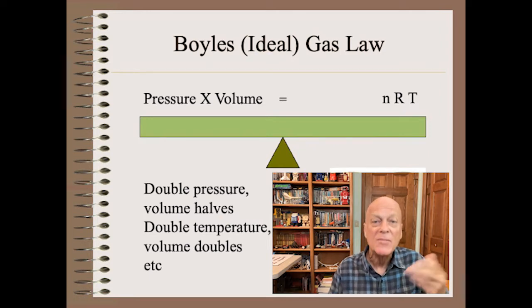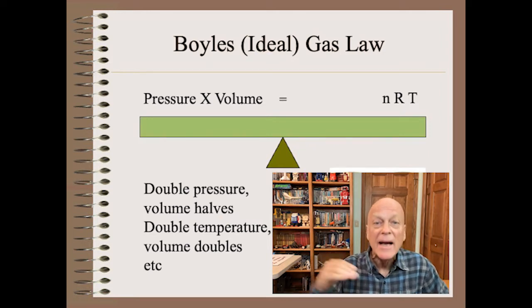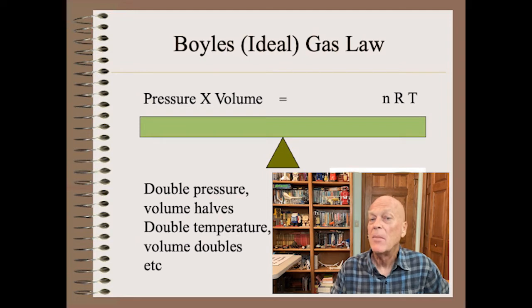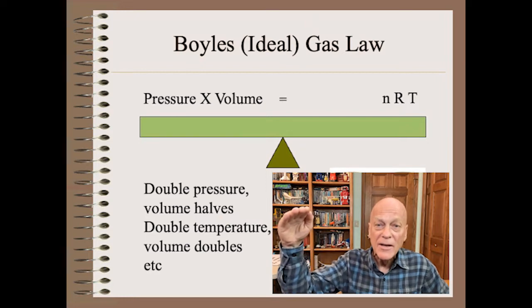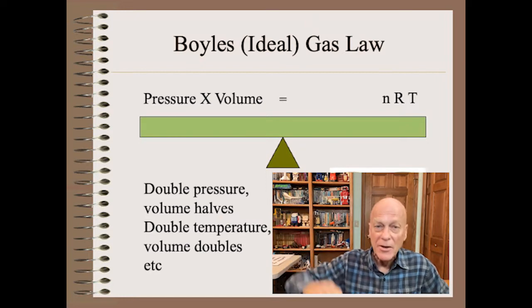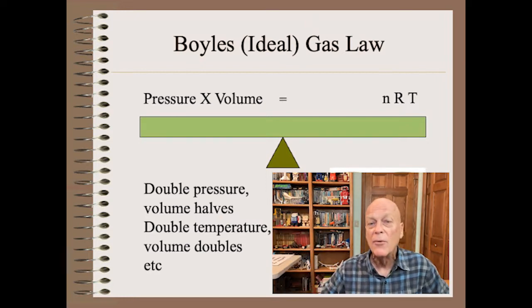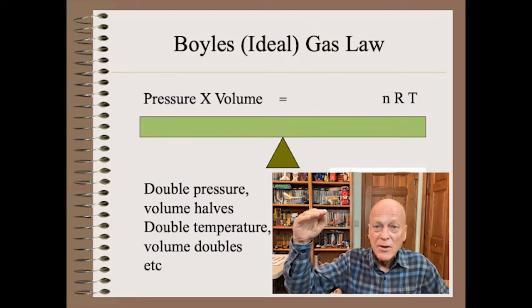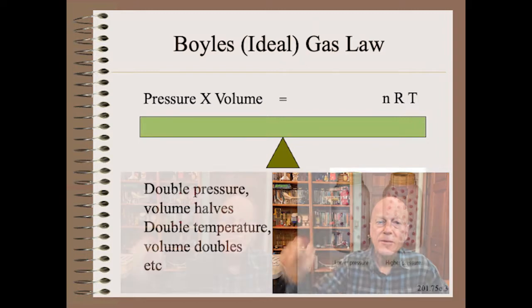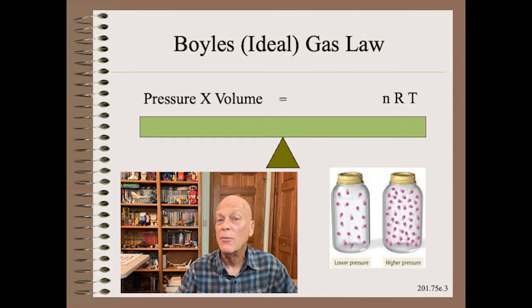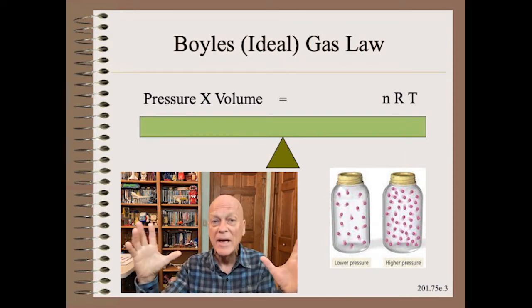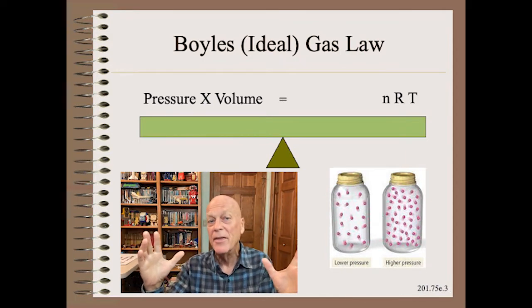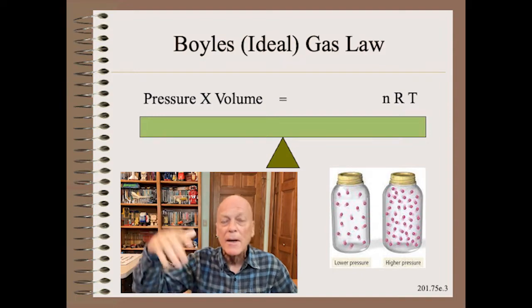Pressure times volume equals a constant times the amount of gas times the temperature. Thus if we double the pressure in a piston the volume halves. If we double the temperature the volume doubles. And if we double the amount of air in a jar then the temperature doubles and so on.